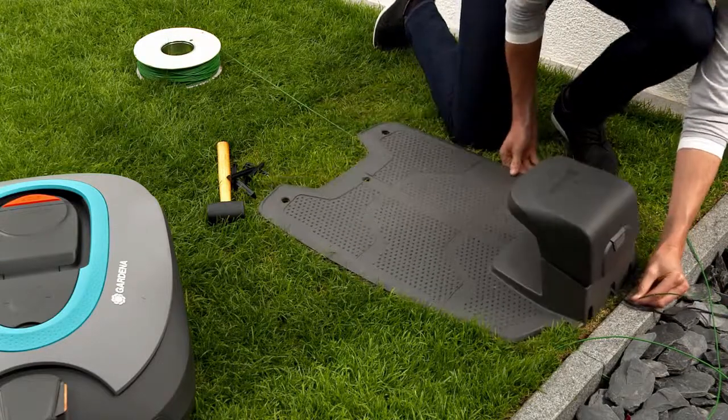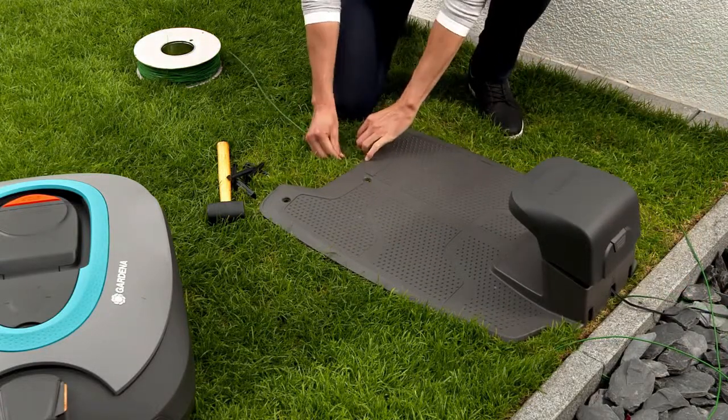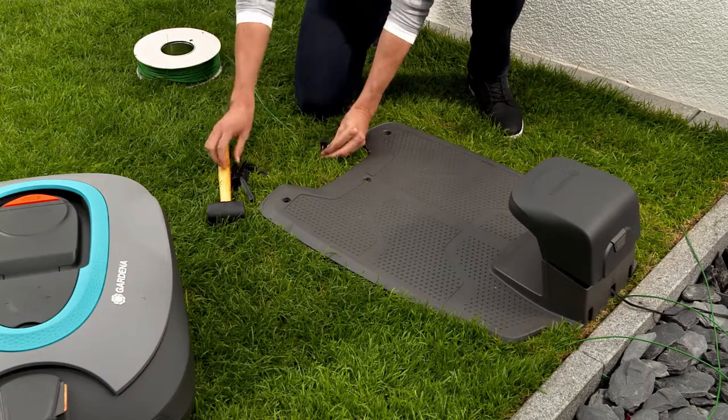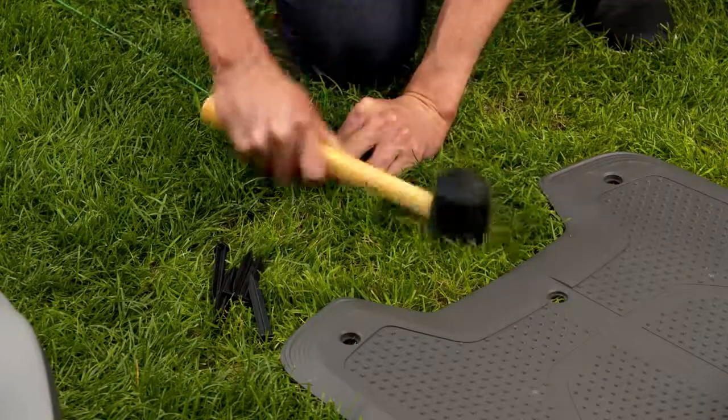Guide the wire through the wire opening in the middle under the base plate of the charging station and route it in a straight line for 2 meters in front of the charging station.